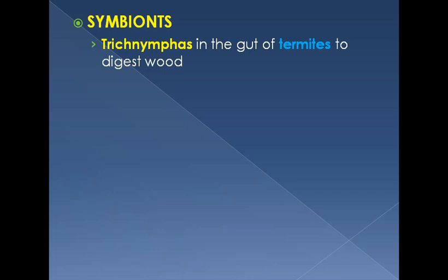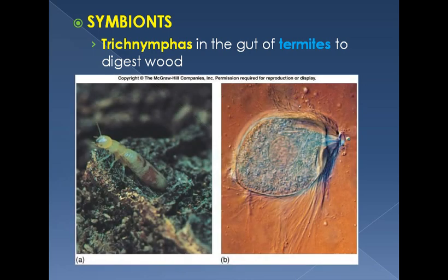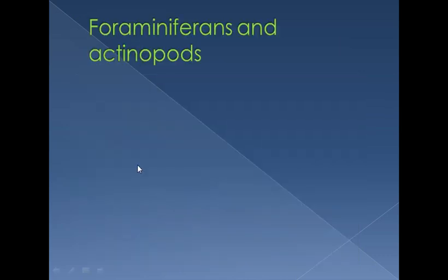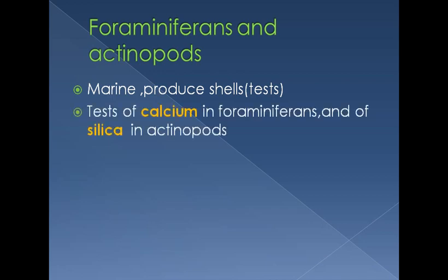Symbiotic protists include Trichonympha, which is found in the gut of termites — wood-eating insects. Termites cannot digest their food, so Trichonympha, a protozoan zooflagellate, lives inside the gut of these termites to digest cellulose for them with the help of an enzyme. Actinopods are marine and have a shell or test around them.